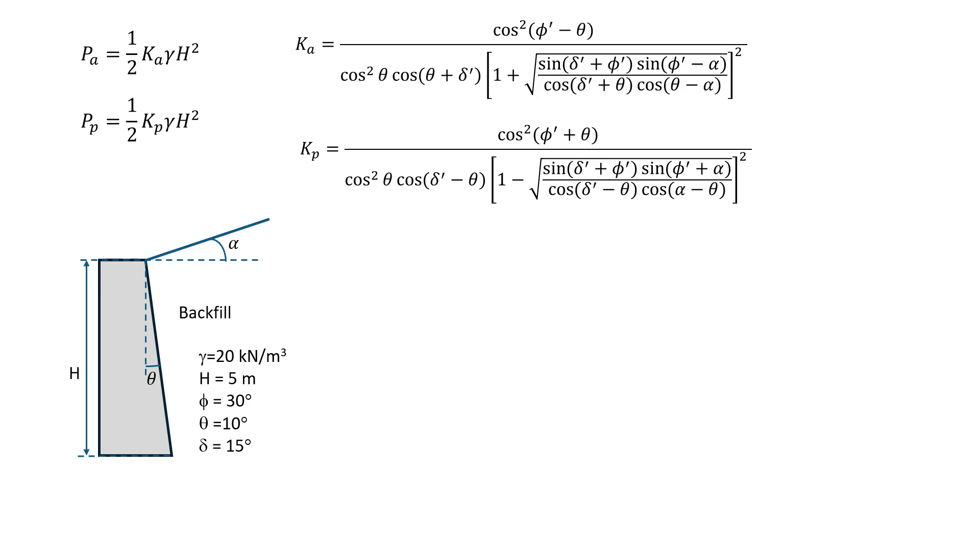Good day, everybody. In this video, I will explain how to estimate Coulomb's passive and active pressure. We're going to look at this example where we have a retaining wall, and we have a backfill material that has a unit weight of 20 kN per cubic meter.